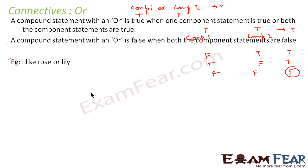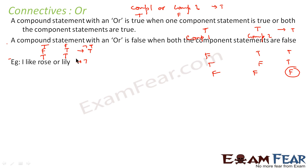For example: I like rose or lily. If 'I like rose' is true and 'I like lily' is true, then the whole statement is true. If 'I like rose' is false and 'I like lily' is true, then also the statement is true. If 'I like rose' is true and 'I like lily' is false, then also it is true. Only when both 'I like rose' and 'I like lily' are false — that is, I don't like rose and I don't like lily — then only is the statement false.